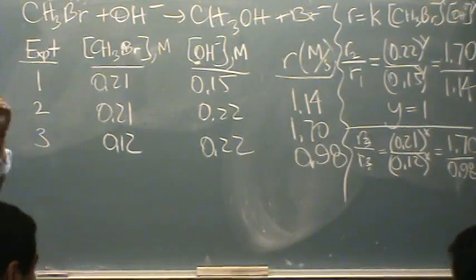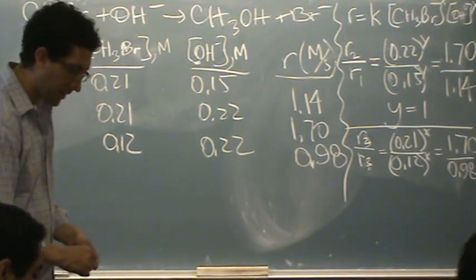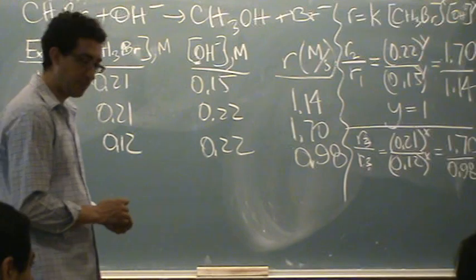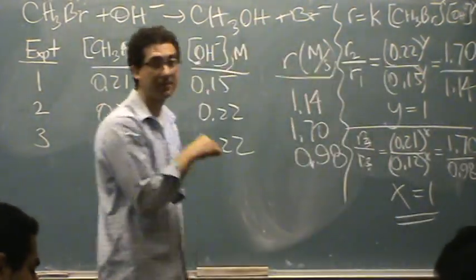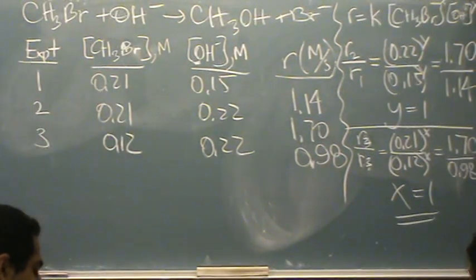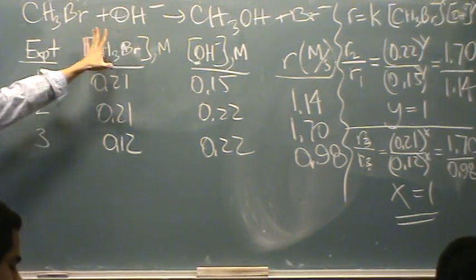Backwards, I'm actually writing 2 over 3. You could have written 3 over 2. It doesn't matter. In this case, same sort of deal, X is going to turn out to be 1 also. So, the overall order of reaction is 2. The first order with respect to CH3Br and with respect to OH-.